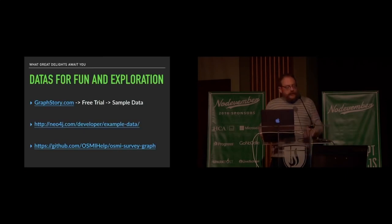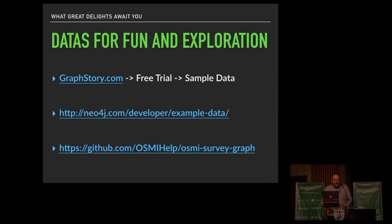There are some links to check out. You can check out graphstory.com — that's the company I'm CTO at. There's a trial available, and I or the CEO answer questions in the web chat directly. There's good example data at neo4j.com. And if you're interested in that survey data and helping develop an API for it, check out OSMI — Open Sourcing Mental Illness — on GitHub. That project is all open source. That's what I've got for you today — question time!